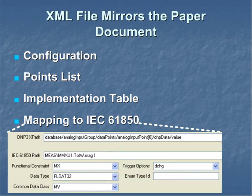An IEC-61850 object model can be represented in the DNP3 XML device profile document by assigning each IEC-61850 data attribute to a configuration parameter, data point, or constant in the DNP3 XML file.